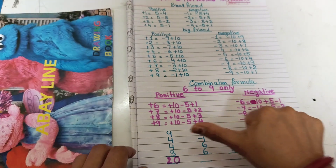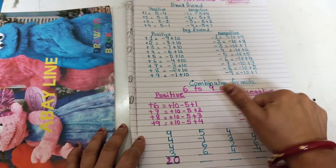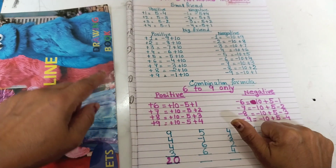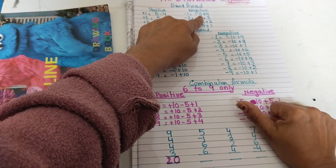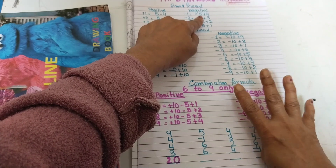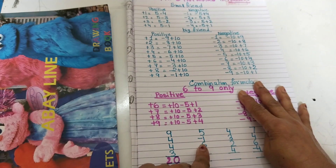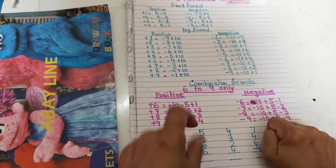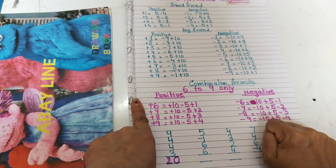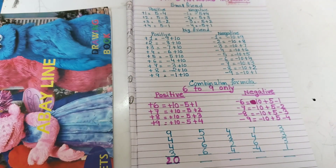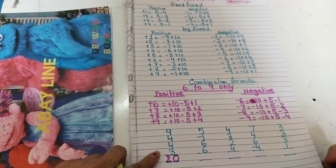Next calculation: 5 minus 1 plus 6 plus 6. For 5 minus 1 — my fingers are closed, so for minus 1 I use minus 5 plus 4. For plus 6, 6 is already up so I use the big friend formula: plus 6 equals minus 4 plus 10. Again plus 6: same formula minus 4 plus 10. The answer is 16.